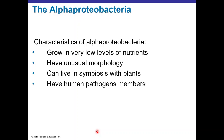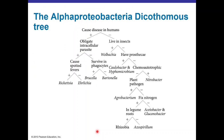Alpha Proteobacteria can live in environments with very low nutrients, have unusual shapes, and can live in symbiosis with plants or be pathogenic. The dichotomous tree for Alpha Proteobacteria subdivides them based on whether they cause disease. Those that do cause disease include obligate intracellular parasites causing spotted fevers like Rickettsia, or those that don't cause spotted fevers like Ehrlichia. Others survive in phagocytes like Brucella, or do not survive in phagocytes like Bartonella.